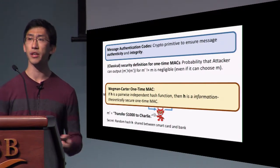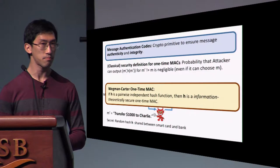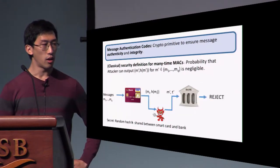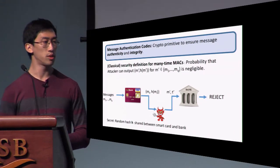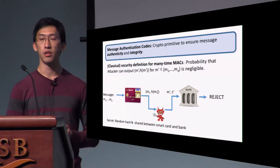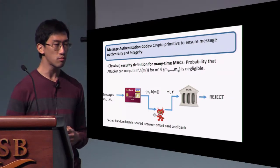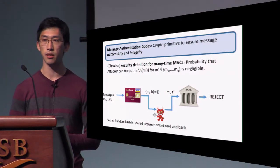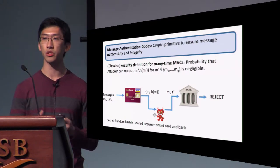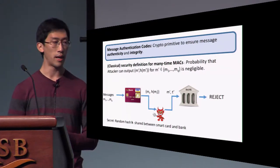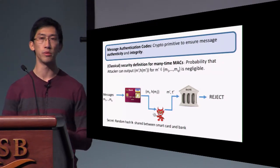The Wegman-Carter MAC is secure against computationally unbounded classical adversaries. This definition generalizes to the many-time setting: if the smart card authenticates multiple messages M1 through MQ and the attacker sees all authentications, it still should not be able to produce a forgery, so long as the number of queries Q is polynomial in the security parameter.